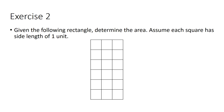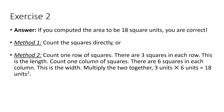In the next exercise, we are given a rectangle and asked to determine the area, assuming each square has a side length of one unit. Method one: count the squares directly. Method two: count one row — there are three squares, which is the length — then count one column — there are six squares, which is the width. Multiply: 3 times 6 equals 18 square units.